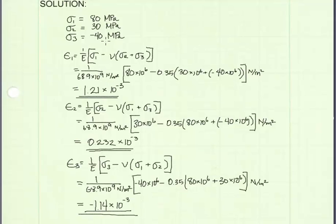Plugging in the values for sigma 1, sigma 2, and sigma 3, we get these values for strain epsilon 1, epsilon 2, epsilon 3. Those are our principal strains. And we're done.